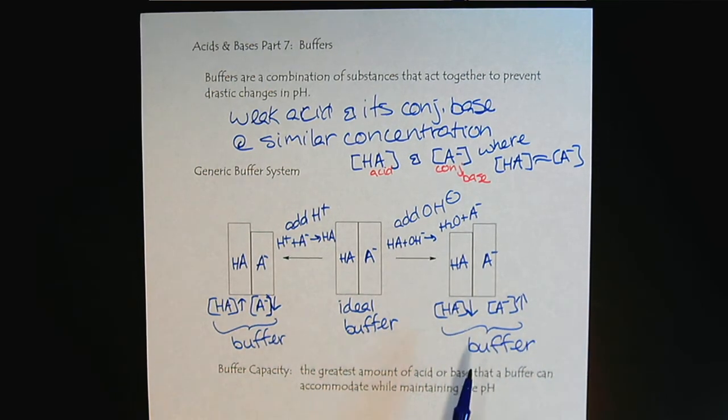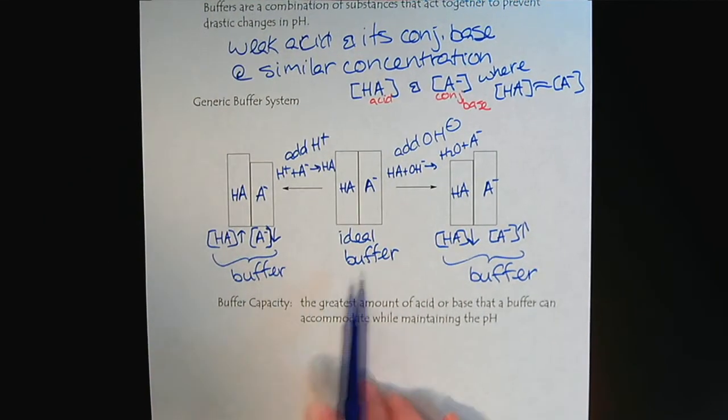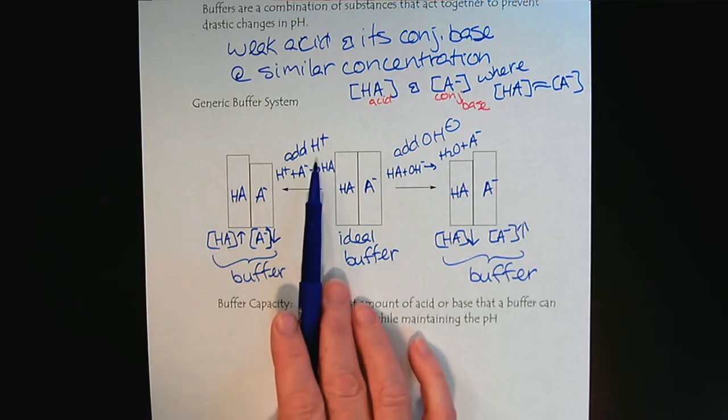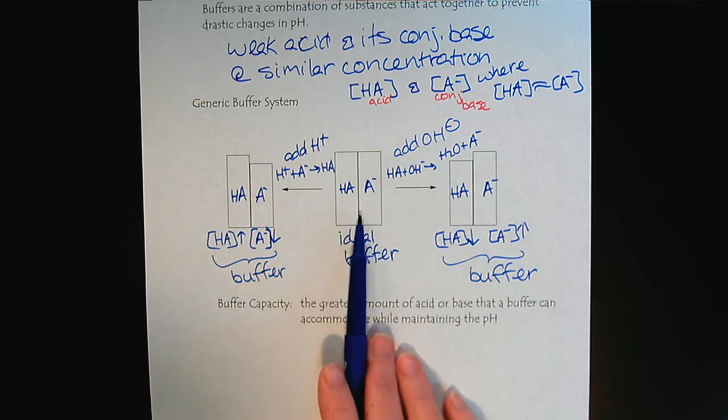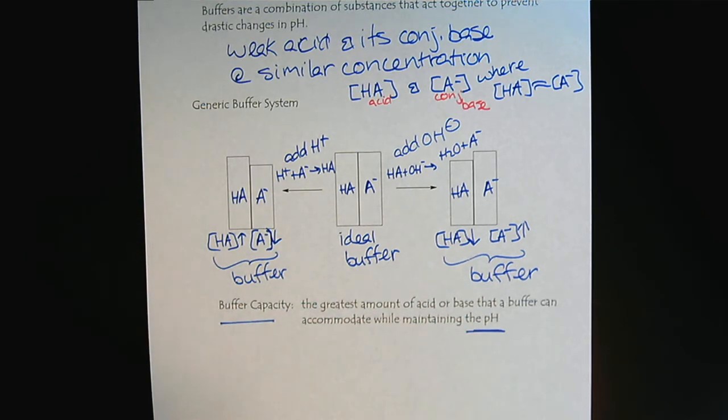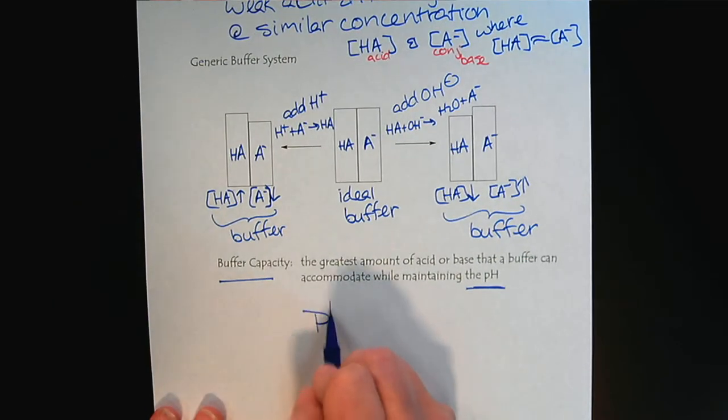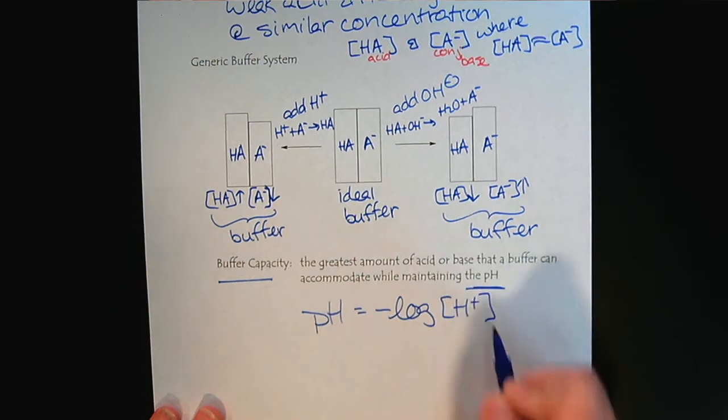But we can see where this is going. There is the concept of buffer capacity. Eventually, if we added a huge amount of hydrogen ions or a huge amount of hydroxide, we may run out of our buffer substances. So we describe that as the buffer capacity, the greatest amount of acid or base that a buffer system can accommodate while maintaining the pH. Whenever we hear the words pH, we recognize that's the negative log of the hydrogen ion concentration.